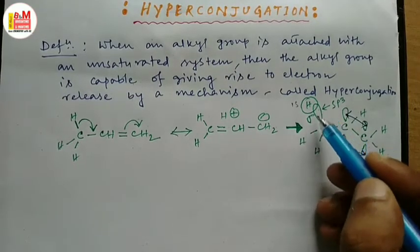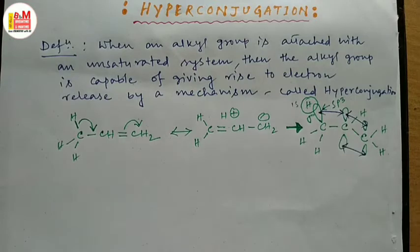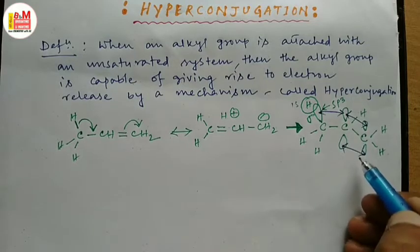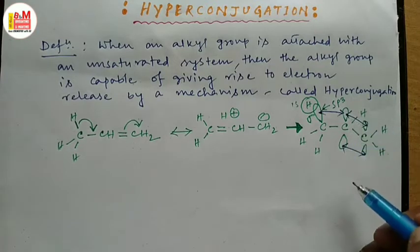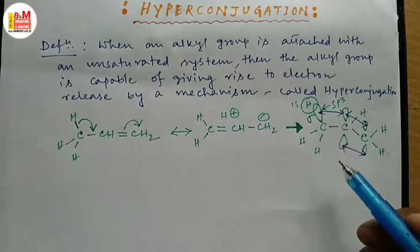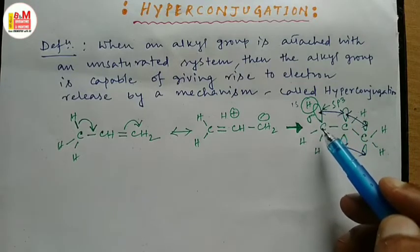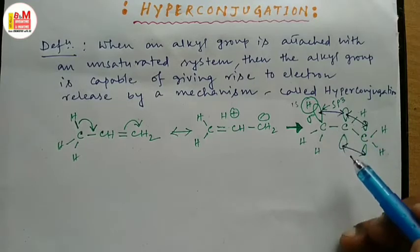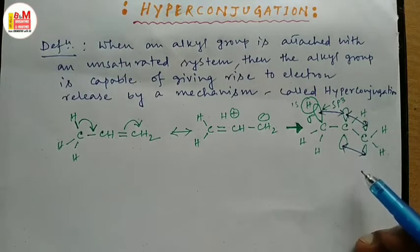But if this sigma electron pair has to take part in this conjugation, then this type of overlapping has to take place, which happens in reality. But the question is: is this overlapping as effective as the overlapping between two perfectly parallel p orbitals? The answer is no. Because here the overlapping takes place between a perfect p orbital and an sp3 hybridized orbital, which are not exactly parallel with respect to each other — they can be treated as almost parallel, but not exactly. So here the overlapping is not as effective. This is the orbital picture.